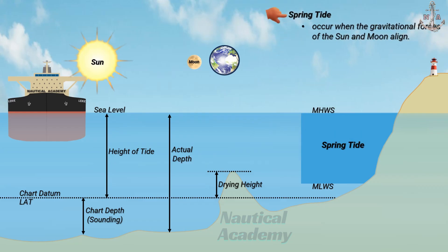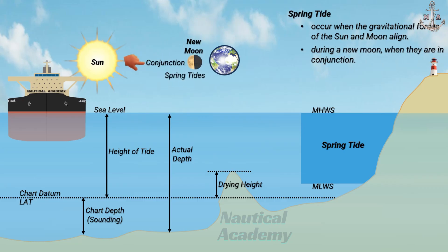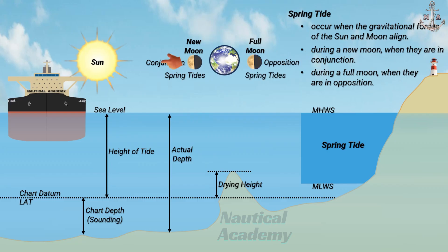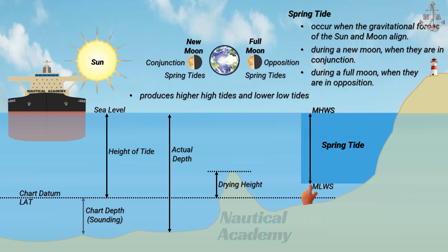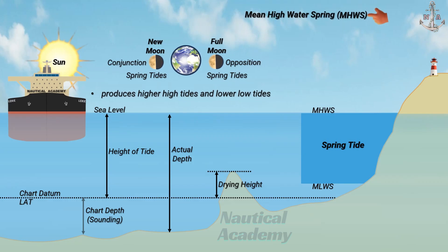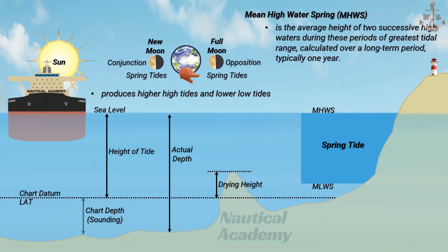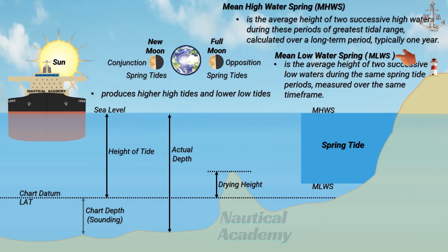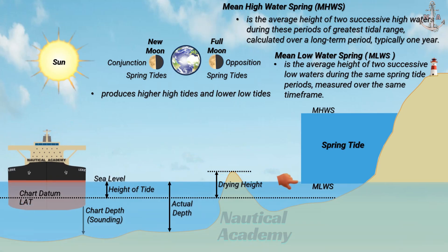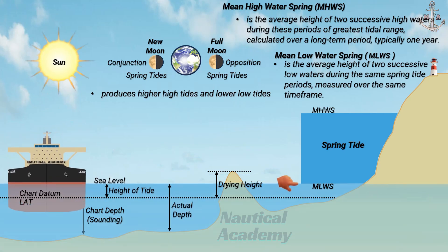Spring tides occur when the gravitational forces of the Sun and Moon align — during a New Moon when they are in conjunction, and during a Full Moon when they are in opposition. This alignment produces higher high tides and lower low tides, creating the greatest tidal range. The mean high water spring is the average height of two successive high waters during these periods of greatest tidal range, calculated over a long-term period, typically one year. The mean low water spring is the average height of two successive low waters during the same spring-tide periods. The difference in height between mean high water spring and mean low water spring is called the spring-tide range.